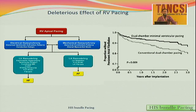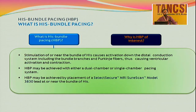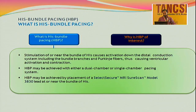We know the deleterious effects of RV pacing. Long-term RV pacing produces both electrical and mechanical dyssynchrony, which in turn results in long-term LV dysfunction, recurrent heart failures, and atrial arrhythmias — particularly atrial fibrillation. There are algorithms in all companies, be it Medtronic or others, to reduce the percentage of RV pacing. Now we have a new concept: instead of pacing the RV myocardium, why not pace the cardiac conduction system directly? That is the concept of physiological pacing.